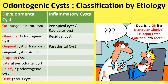Gingival gives our two cysts: gingival cysts of the newborn and gingival cysts of the adult. Eruption gives eruption cysts, later gives lateral periodontal cysts, calcified gives calcifying odontogenic cysts, and teeth — that is dental — gives our dentigerous cysts. How easy is that for remembering the odontogenic cysts!